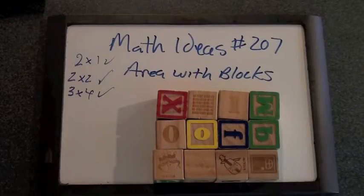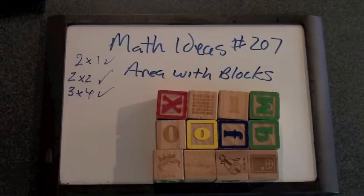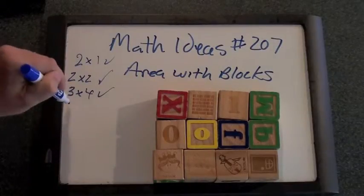What one do you want to make? You do one and then that'll be our last one. What shape do you want to make? I'm going to make a four by four square. Okay.